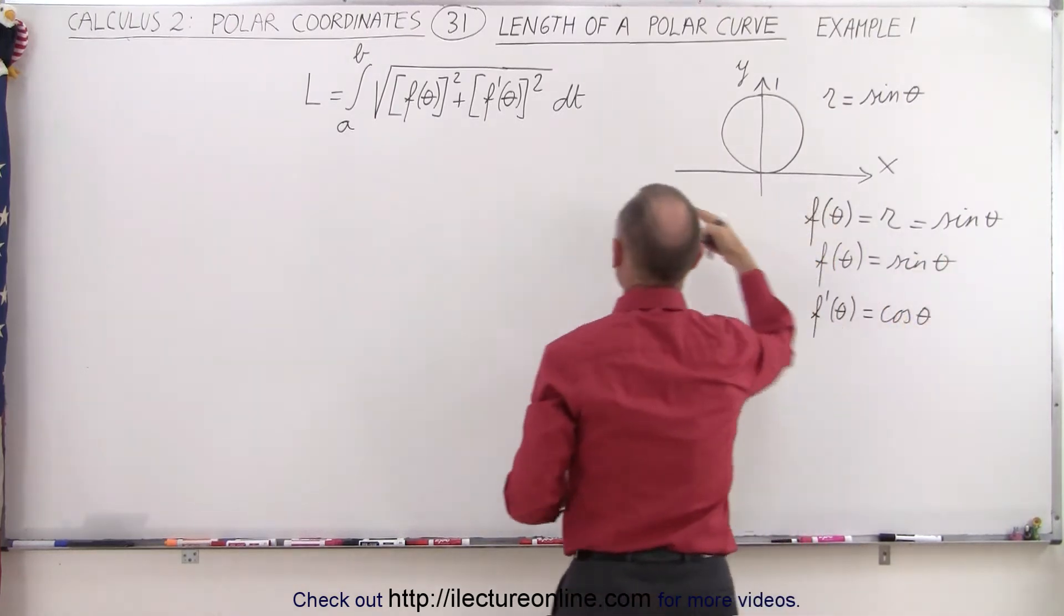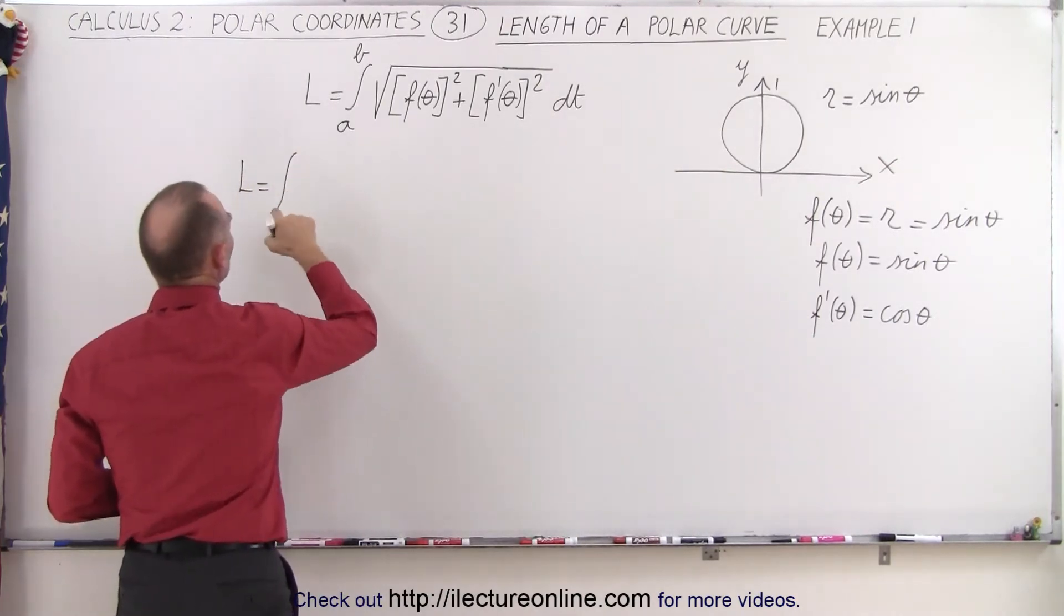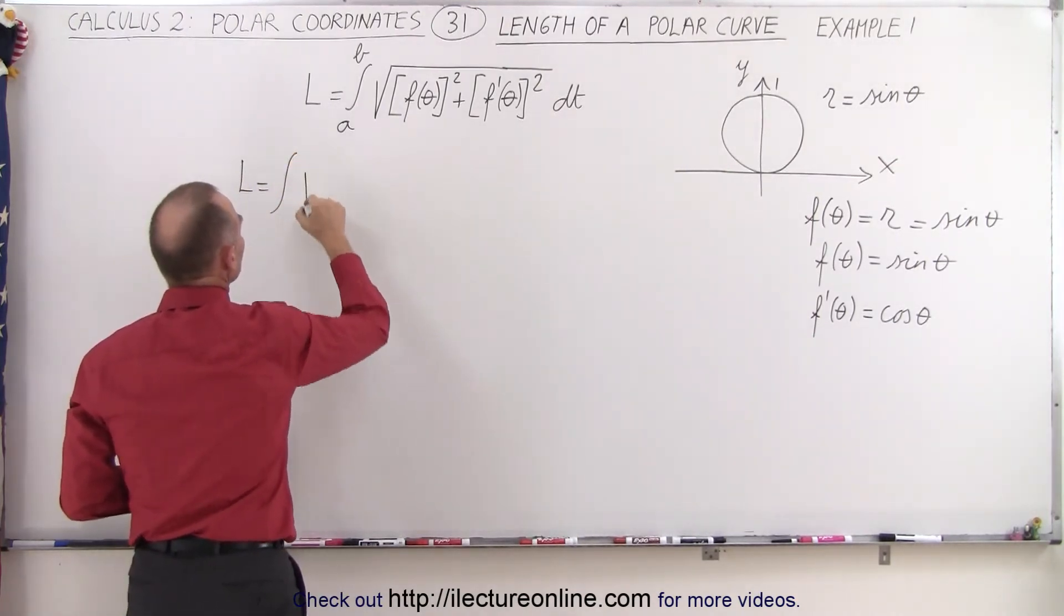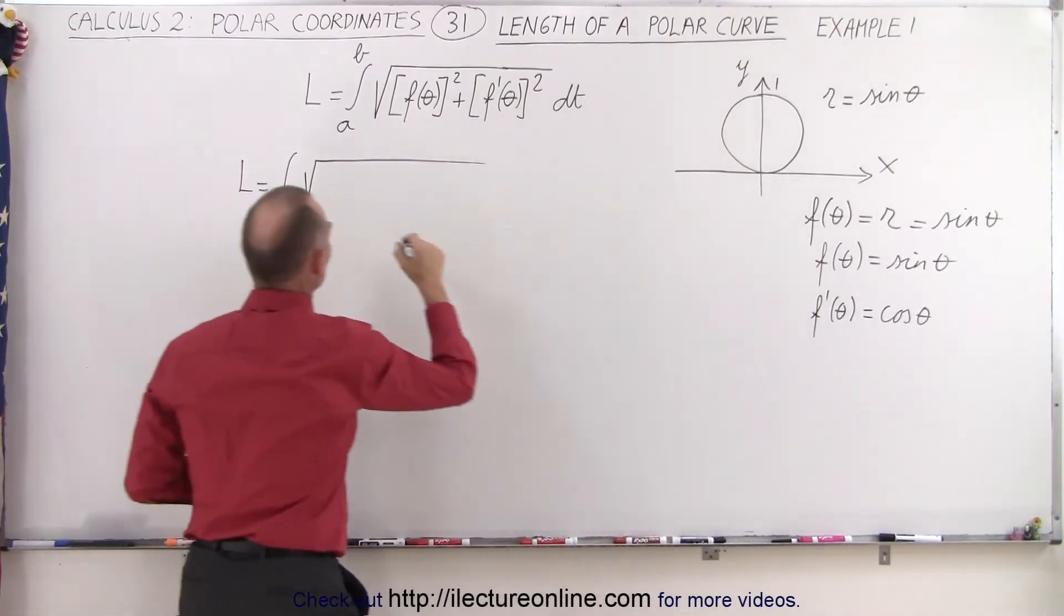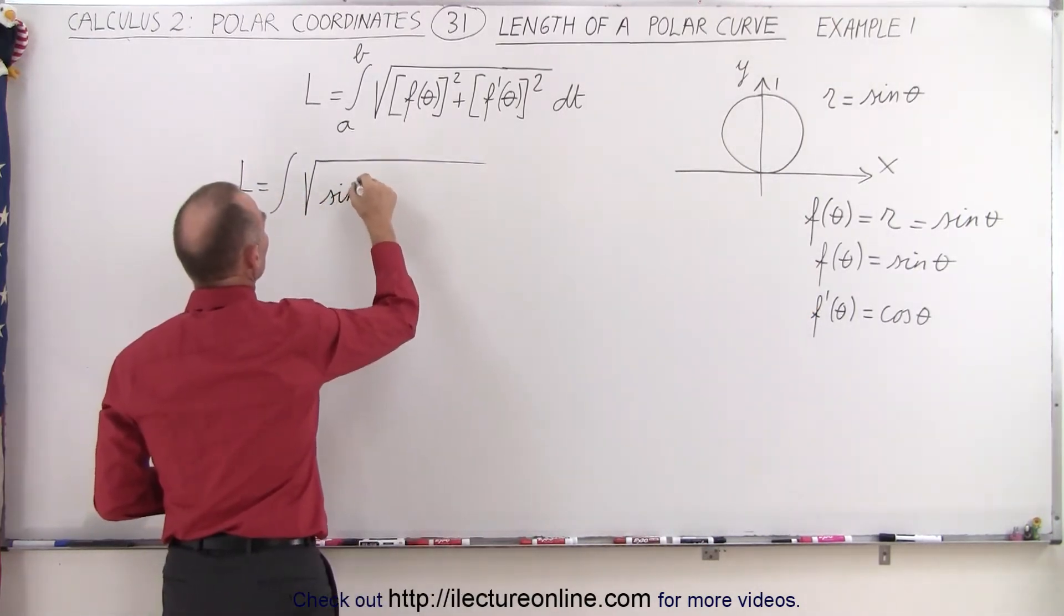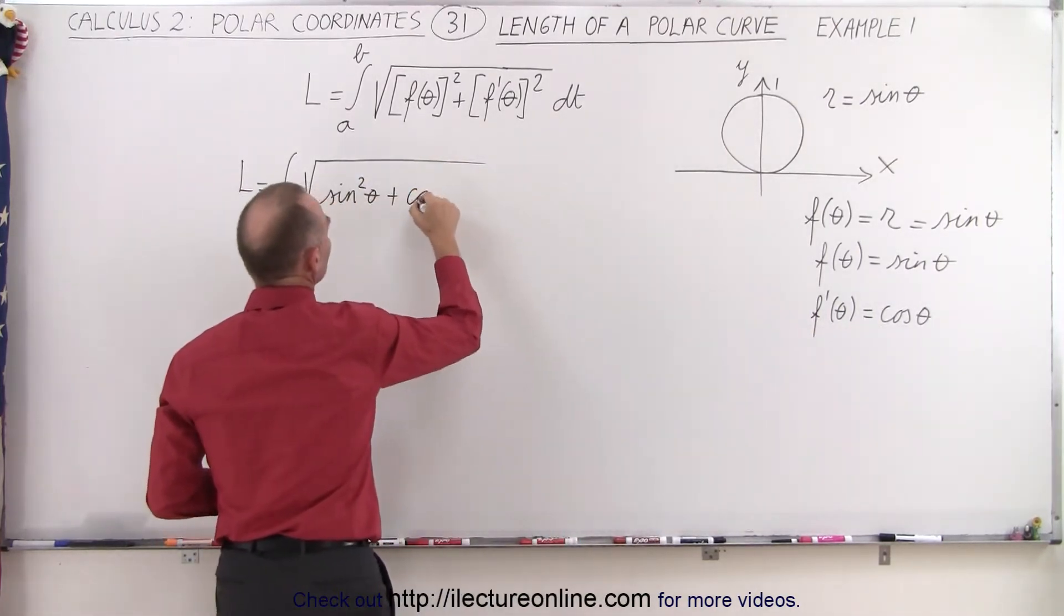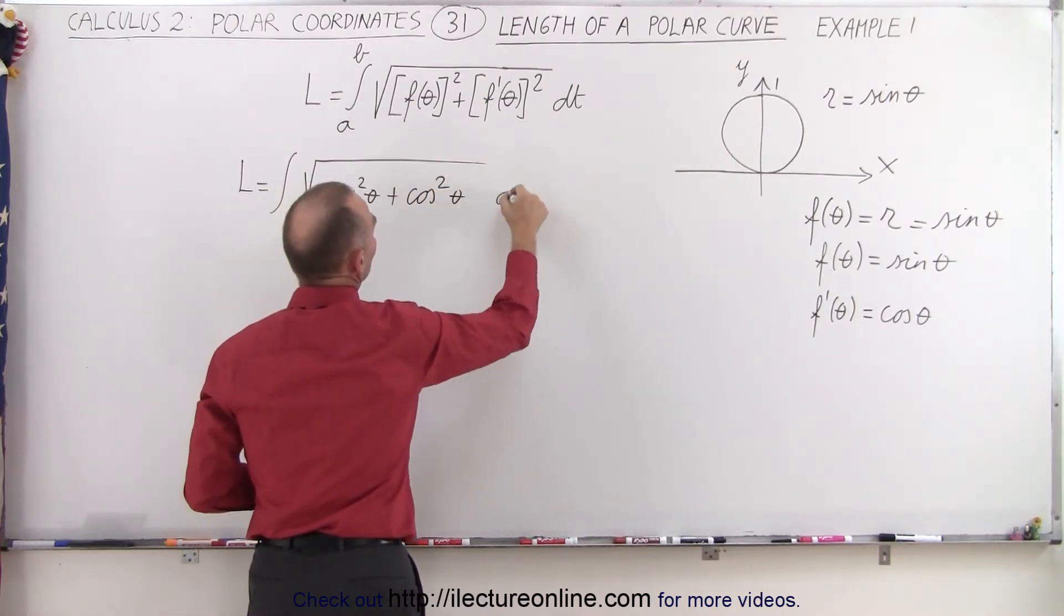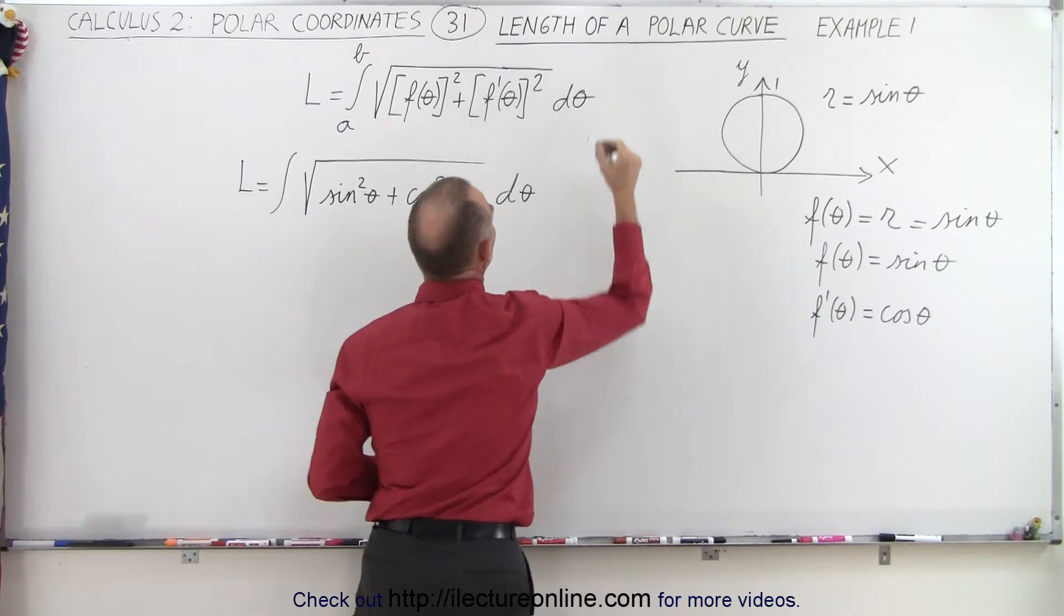So now we go ahead and plug those in here. So we know that the length is equal to the integral, and we'll worry about the limits later, times the square root of the function squared. So therefore, we have the sine square of theta plus the derivative of the function squared, which is the cosine square of theta, times d theta.